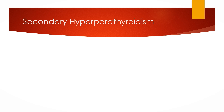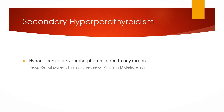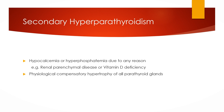In secondary hyperparathyroidism, hypocalcemia or hyperphosphatemia due to any reason — for example renal parenchymal disease or vitamin D deficiency — results in increased stimulation of the parathyroid glands, and this results in physiological compensatory hypertrophy of all parathyroid glands. Since low calcium is the stimulus, in this case you will find low calcium or low-normal level of calcium.